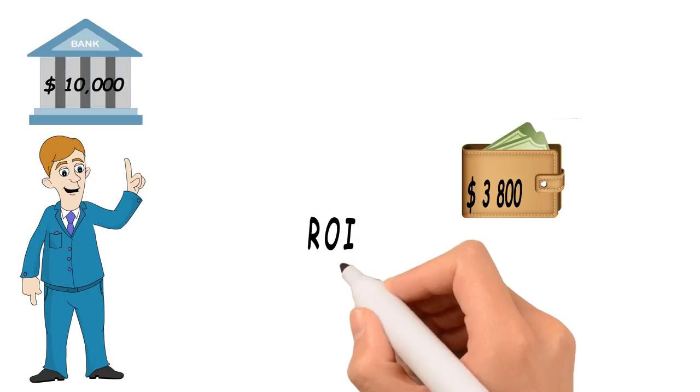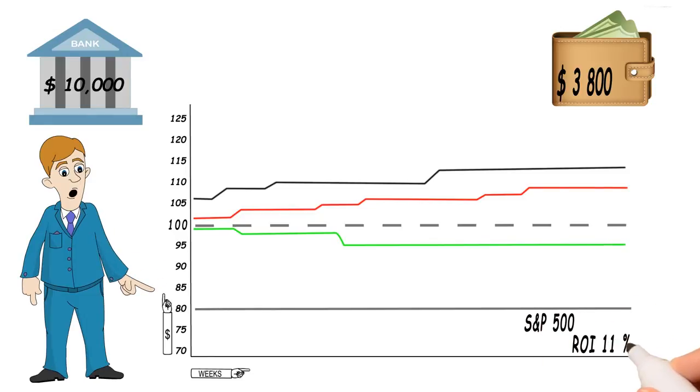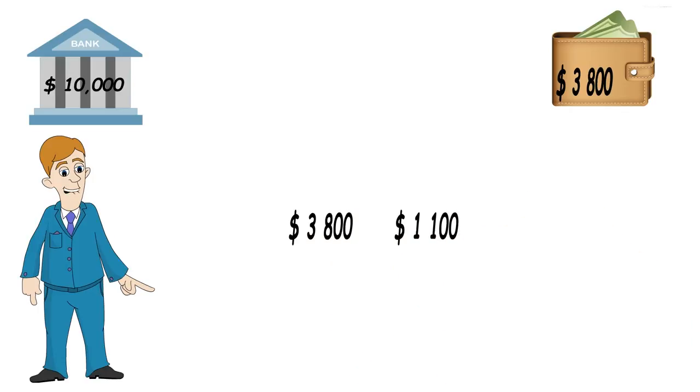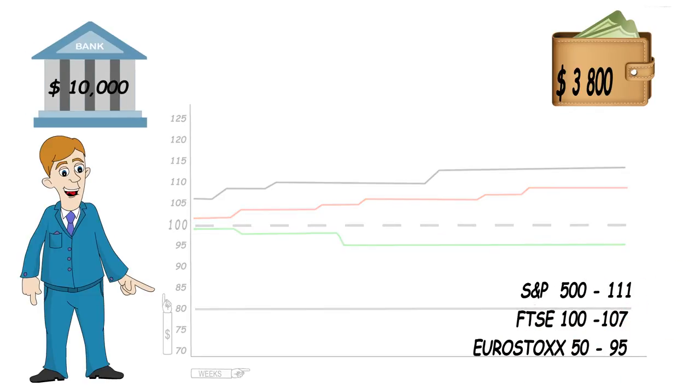Or a total return on investment of 38%, even though the best performing index only returned 11% during the same period. So that's $3,800 rather than $1,100 for the same period, if you invested solely in the S&P 500.